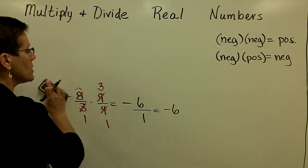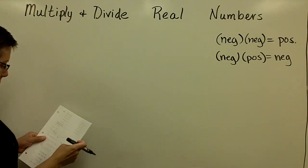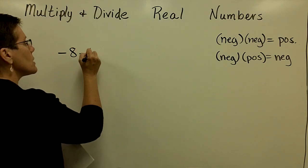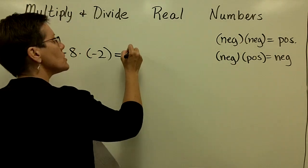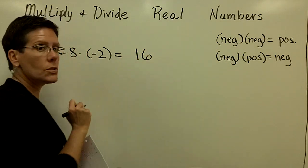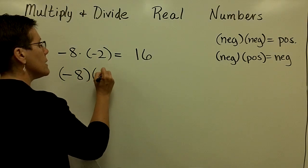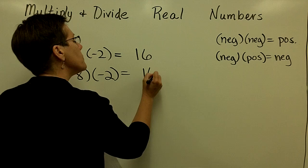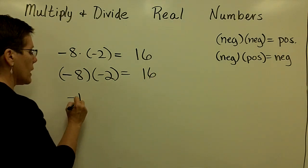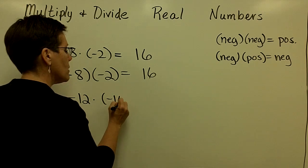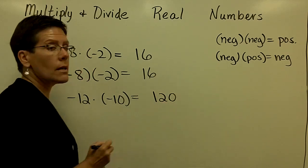Let's look at a few problems involving a negative times a negative. Negative 8 times negative 2: you might see it written various ways, but a negative times a negative is just a positive value, and 8 times 2 is 16. Negative 12 times negative 10: a negative times a negative is a positive, and 12 times 10 is 120.